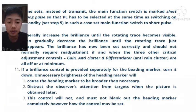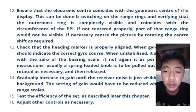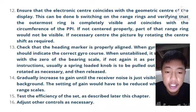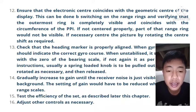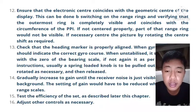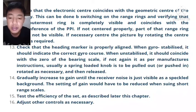Number eleven, if a brilliance control is provided separately for the heading marker, turn it down. Unnecessary brightness of the heading marker will cause it to be broader than necessary and distract the observer's attention from other targets when the picture is obtained. Number twelve, ensure that the electronic center coincides with the geometric center of the display. This can be done by switching on the range rings and verifying that the outermost ring is completely visible and coincides with the circumference of the PPI. If not centered properly, part of the range rings will not be visible. If necessary, center the picture by rotating the center shift as required.